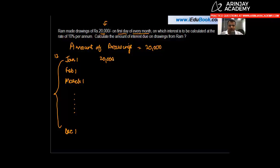We get that the number or amount of drawing which has been made is fixed, and they are made on the first day of every month, on which interest is to be calculated at the rate of 10% per annum.